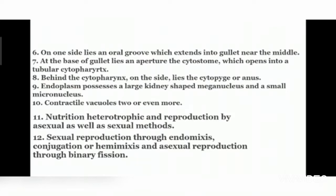On one side lies an oral groove which extends into a gullet near the middle. At the base of the gullet lies an aperture called the cytostome, which opens into a tubular cytopharynx. The gullet functions like the esophagus in the human body — the tube through which food passes from the mouth to the stomach. Behind the cytopharynx on the side lies the cytopyge, or anal pore.